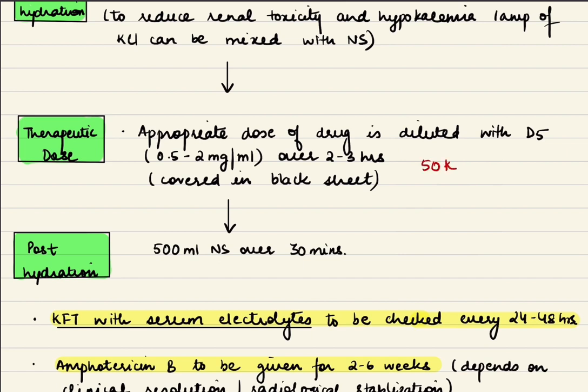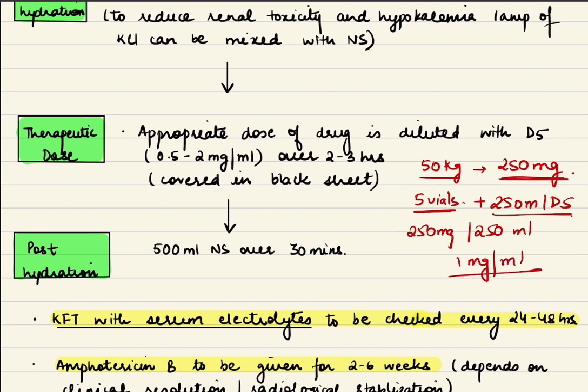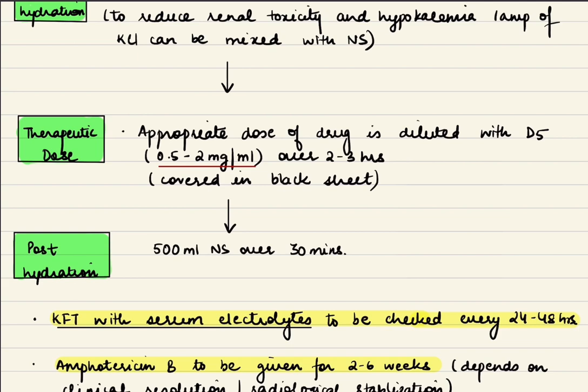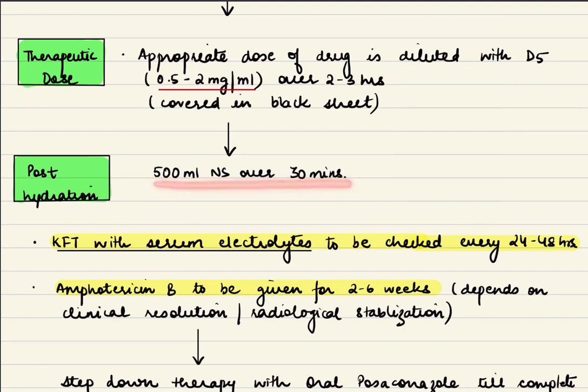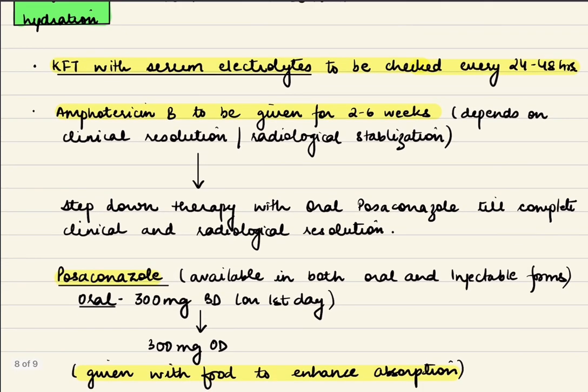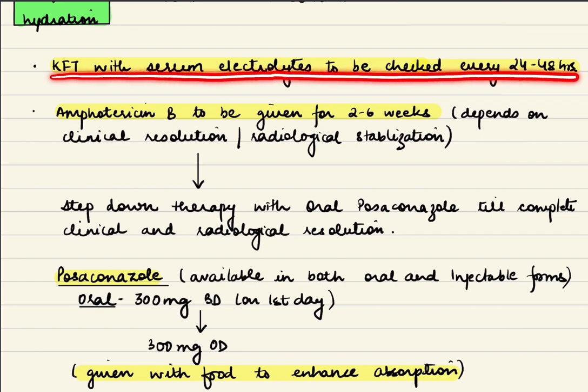To give you an idea of appropriate dosage and dilution with D5: for example, if the patient is 50 kilograms at 5 mg per kg, the patient requires 250 mg. This requires 5 vials, as 1 vial is 50 mg. After reconstitution, dilute with 250 ml of D5, so 250 mg in 250 ml becomes 1 mg per ml. We dilute in the region of 0.5 to 2 mg per ml. Then post-hydrate with 500 ml of NS over 30 minutes. Important to measure kidney function tests with serum electrolytes every 24 to 48 hours.